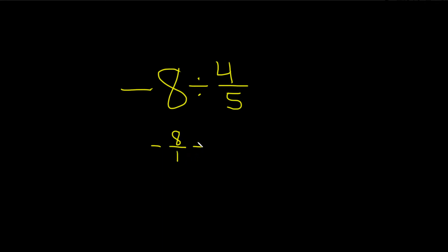And this is being divided by 4 over 5. The next step is to change the division to multiplication. So whenever you divide, you're really multiplying by the reciprocal.